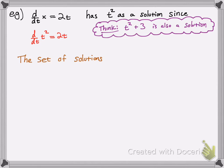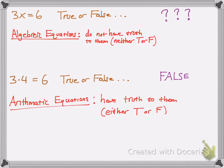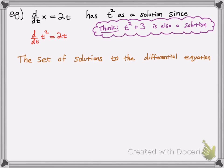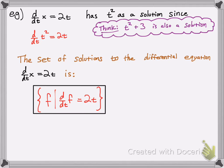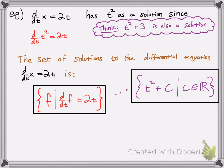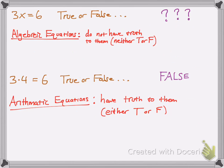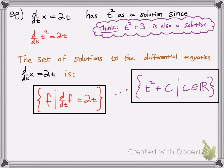Let's describe the set of all solutions, written two ways just like before. The set of solutions can be written as: the set of all functions f such that d/dt of f equals 2t. That can also be written as the set containing t squared plus c, where c is all real numbers. Notice how this is a function, while in algebraic equations these were numbers — that's the key difference. This is a first-order equation, which we may get into more in future videos.